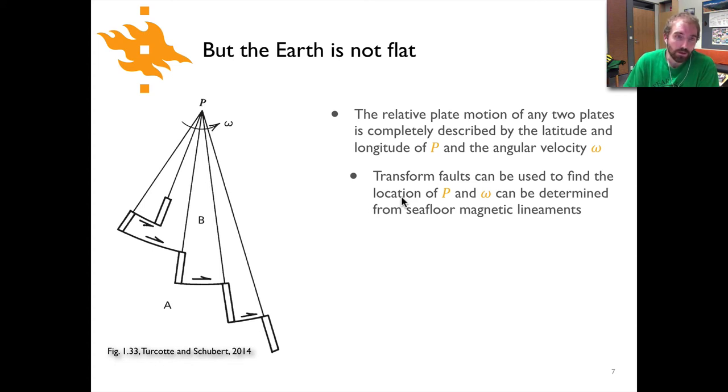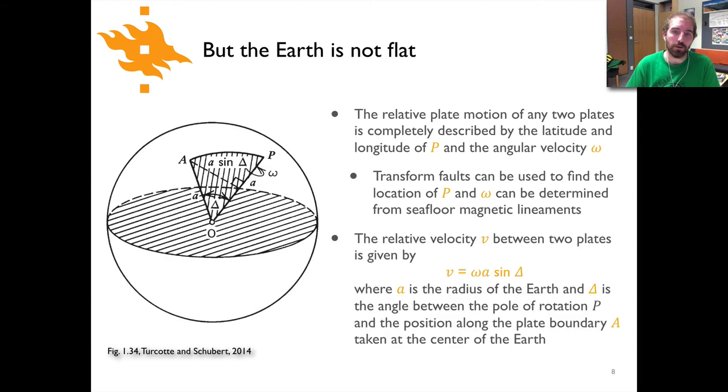You can locate the position of this Euler pole P if you have spreading ridges by using transform faults. It turns out that transform faults will form small circles around the point P, and so you can actually use that to find the position of P. And you can calculate what omega is using seafloor magnetic anomalies like what we saw in the first lecture. So just with those two simple observations we can figure out where this point is and what the rate is that the two plates are rotating with respect to one another.